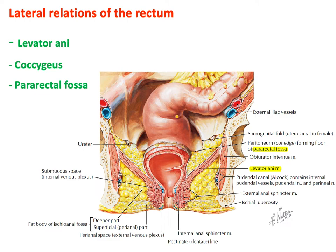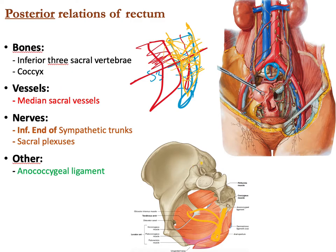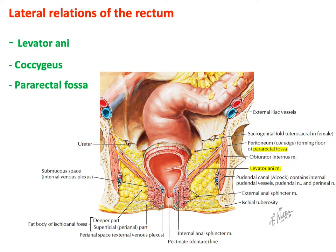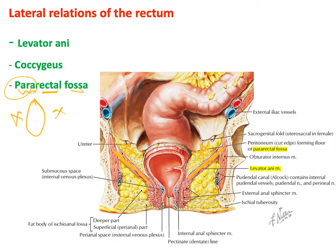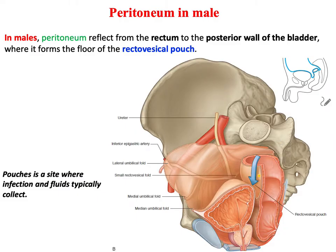Laterally, the rectum is related to the levator ani muscle forming the pelvic floor, and the coccygeus muscle. On each side of the rectum, above the pelvic diaphragm, there is a fat-filled space called the pararectal fossa.